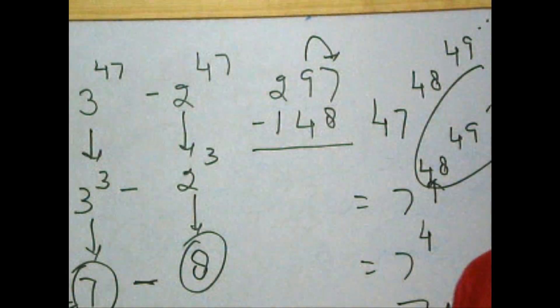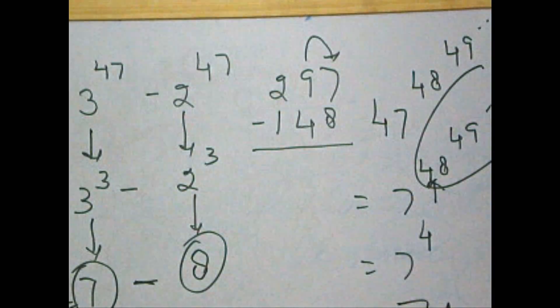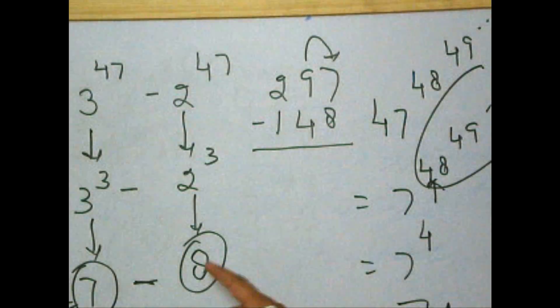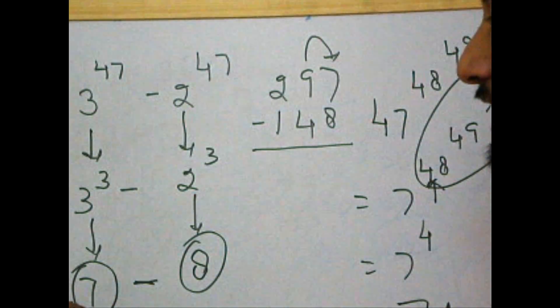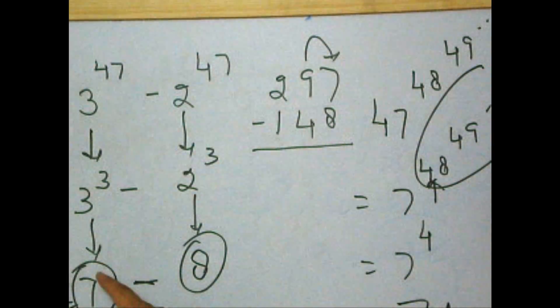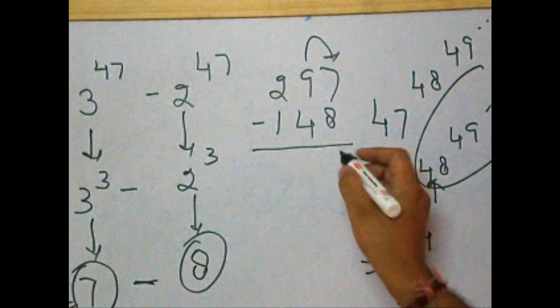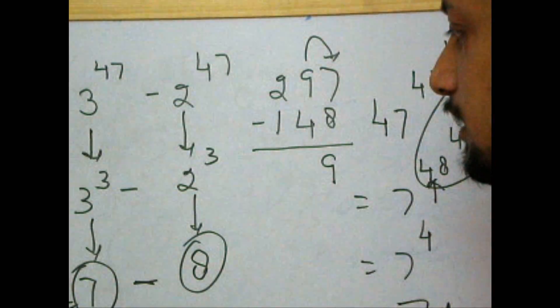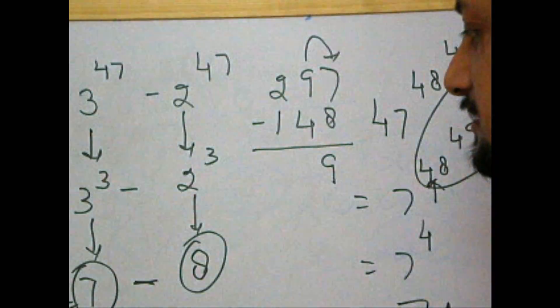We have always been taught, we will always subtract smaller number from the larger number and not vice versa. So, we will not say 7 minus 8 equals minus 1. Rather, there is something on the left of 7. We will borrow. This will be 17. 17 minus 8 equals 9. And that's what the answer will be.